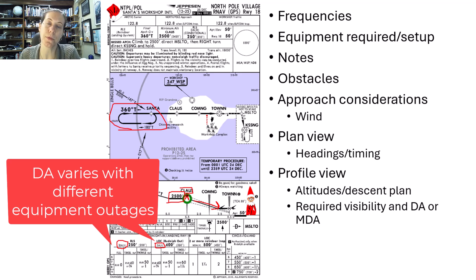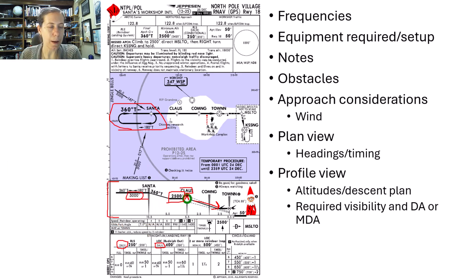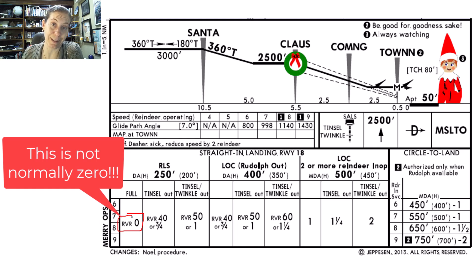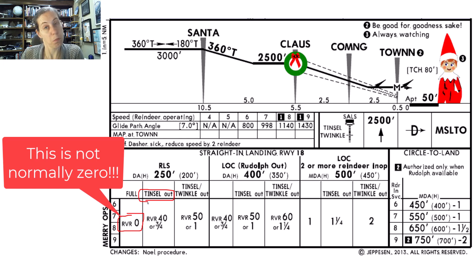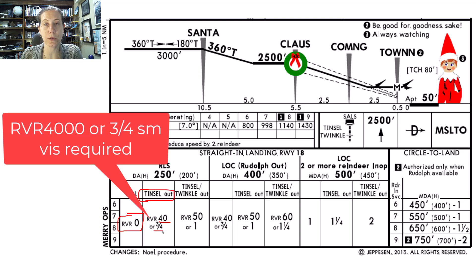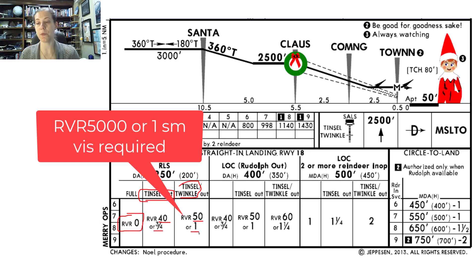I also want to brief my minimum visibilities. This is an interesting approach — they've said no visibility is required if everything is working: RVR is zero, so that's a true all-weather operation. But if the tinsel were out, my minimum would be an RVR of 4,000 or three-quarter statute mile. If both tinsel and twinkle were out, my RVR would be required at 5,000, or one-mile visibility.